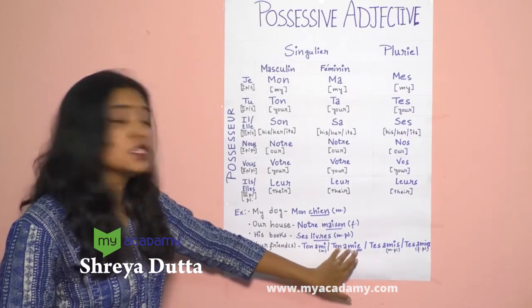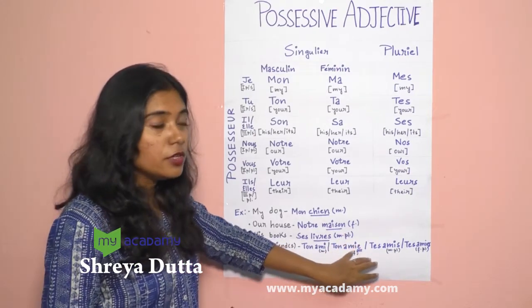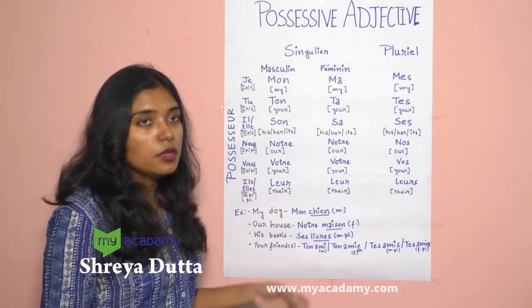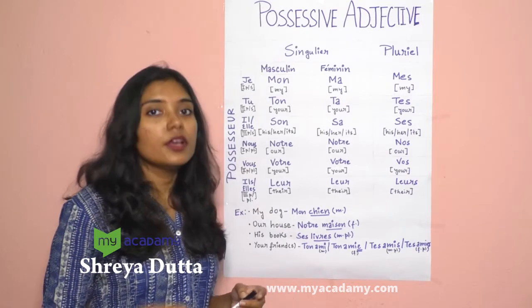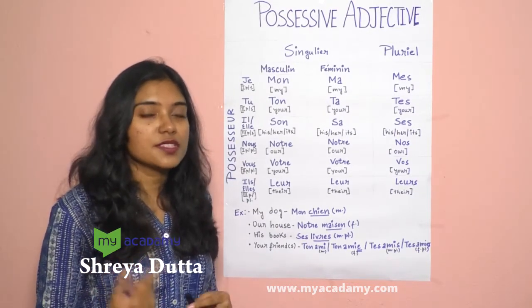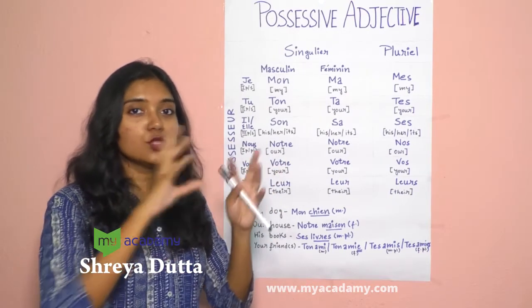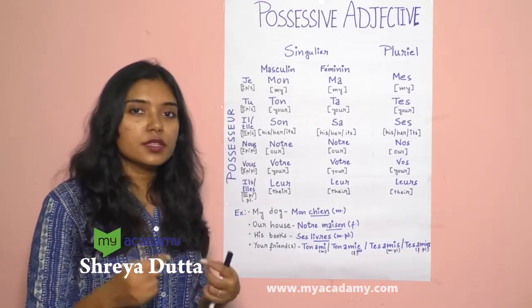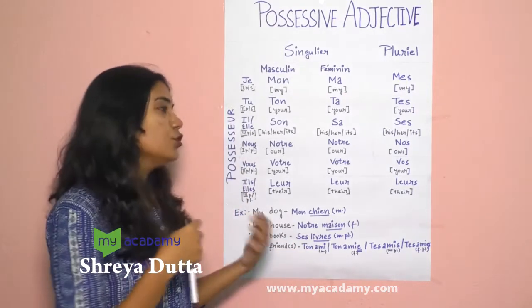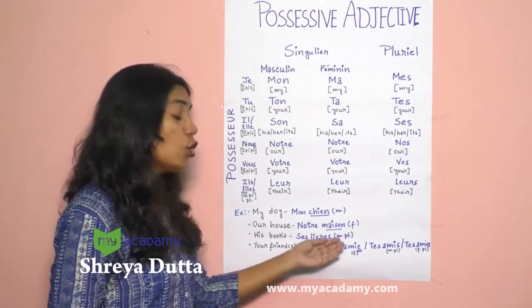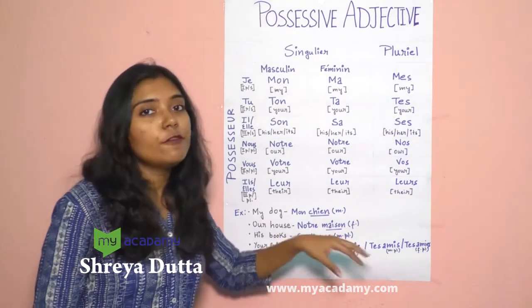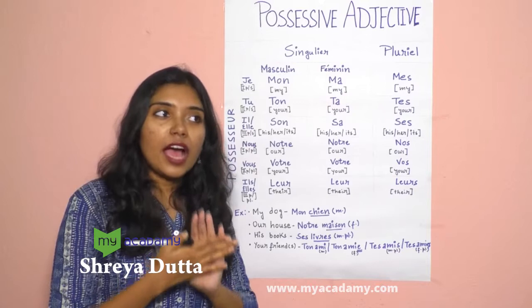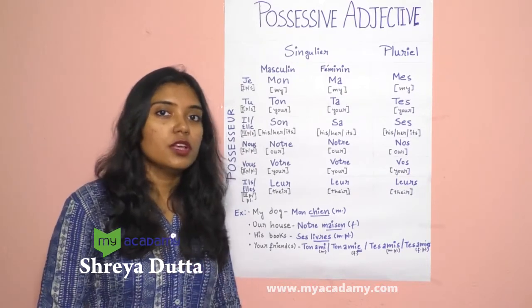Why do we use ton instead of ta before amie? Because if you say ta ami, those two vowel syllables merge together and it's difficult to pronounce. But ton ami flows naturally. So linguistically, to make it more feasible, we say ton ami — be it masculine or feminine. The rule is: if any word in French starts with A, E, I, O, U, or H muet in its singular number, you must use the masculine singular form of the possessive adjective. This rule must always be remembered.